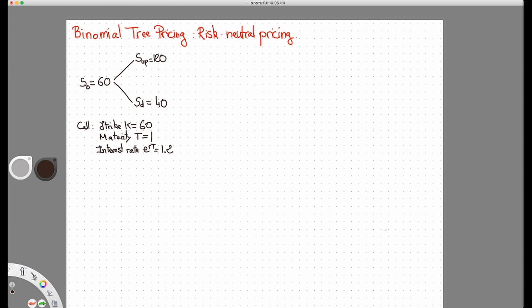That's really a feature of binomial tree pricing—I only have two choices, either I can go up or I can go down. What I'm interested in is a call option with a strike of $60, maturity one year, and I know that interest rates are such that if I borrow $1 today, I'm going to have to repay in a year $1.20.